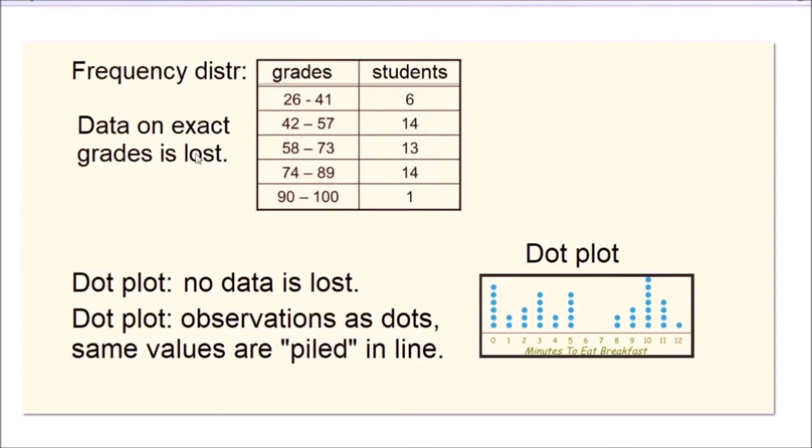But the problem is, some of the exact grades, some of the exact values of particular individual observations are lost. For example, out of these 13 students who got the grades between 58 and 73, we don't really know what are the individual grades of each of these 13 students.